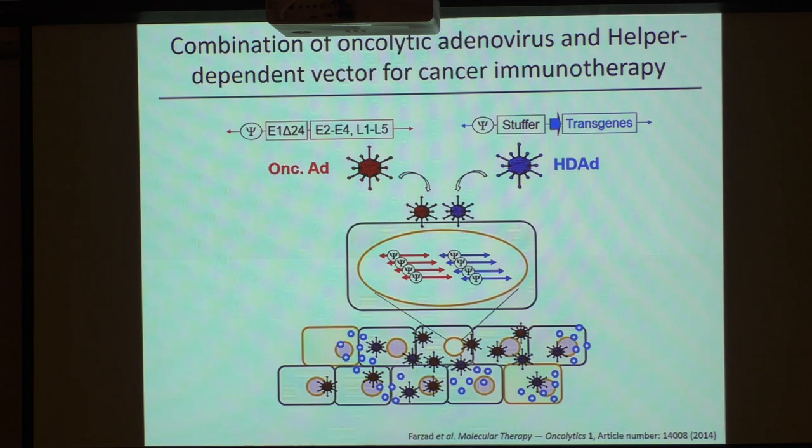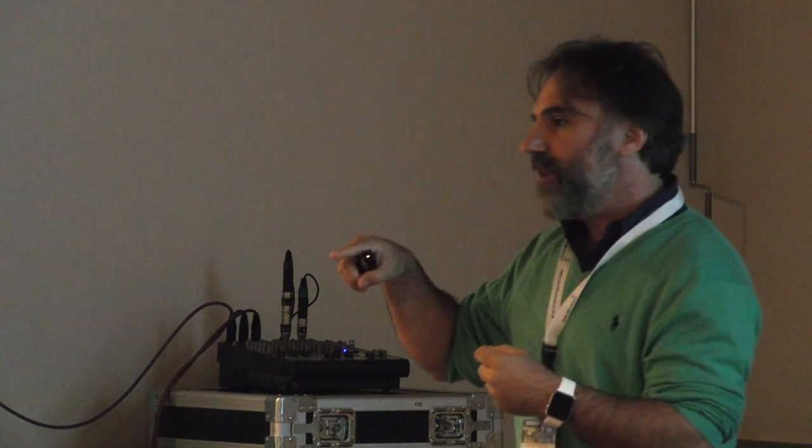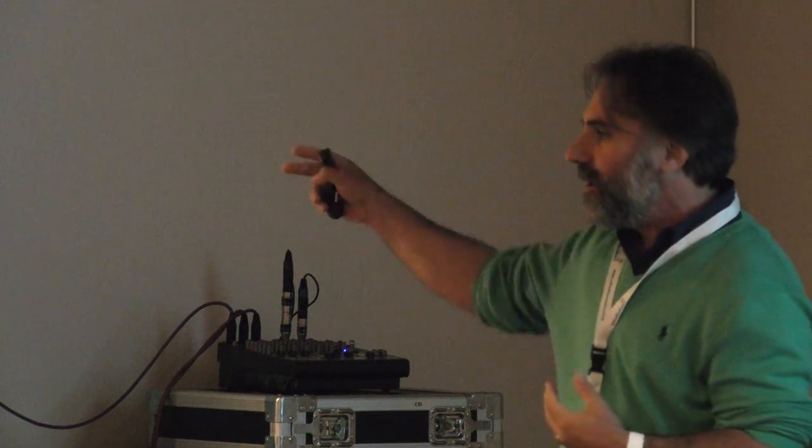There was also a very interesting approach by Dr. Suzuki Masataka at Baylor College of Medicine showing that you can combine a helper-dependent vector — which has very high capacity so you can clone whatever you want into it — together with an oncolytic virus. The oncolytic virus acts as a helper in vivo for propagation of the helper-dependent virus. Instead of just one round of infection, it can propagate and maintain very long activity. A very original example of how these two vector types can be combined.